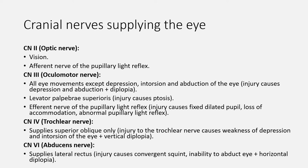The oculomotor nerve also supplies the levator palpebrae superioris muscle which elevates the eyelid, so injury to the oculomotor nerve causes ptosis. The oculomotor nerve also represents the efferent nerve of the pupillary light reflex because it supplies the constrictor pupillary muscle. Therefore, injury of the oculomotor nerve causes a fixed and dilated pupil with loss of accommodation and abnormal pupillary light reflex. Cranial nerve 4 is the trochlear nerve, supplying the superior oblique muscle only. Injury to the trochlear nerve causes weakness of depression and intorsion of the eye, causing difficulty reading and walking downstairs. The patient's head tilts to the opposite side to compensate, and vertical diplopia occurs — it is important to remember that trochlear nerve injury causes vertical diplopia.